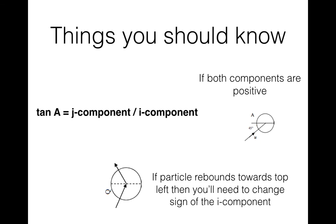If you're looking for an angle between the vertical and a particular vector, then tan of the angle would actually be the i component over the j component — but we'll see that in a later video.